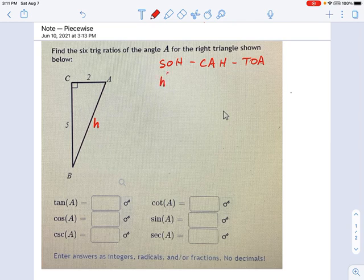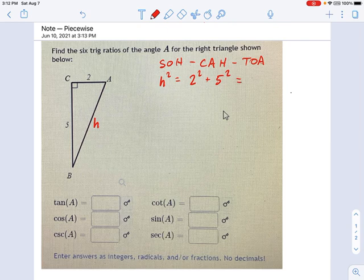So h squared equals 2 squared plus 5 squared - that's the Pythagorean Theorem. And 2 squared plus 5 squared is 29, so instead of h, we can write here the square root of 29. Now we have three sides on the triangle.